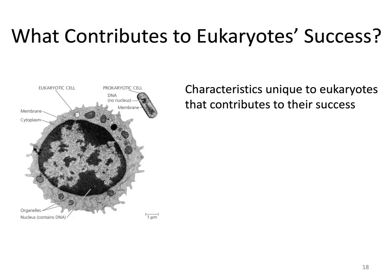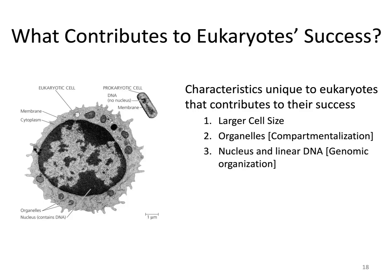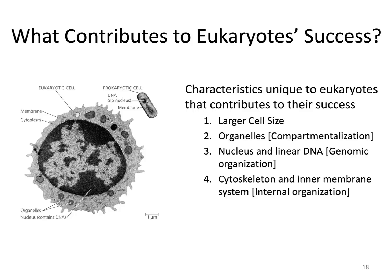What contributes to eukaryotes' success? Let's talk about characteristics unique to eukaryotes that contribute to their ability to survive in so many habitats. One is their larger cell size — with both advantages and disadvantages. Two is the fact they have organelles, which allows compartmentalization of different cellular processes, aiding efficiency. Third, they have a nucleus with DNA packed into linear chromosomes, which is important for expressing different traits.